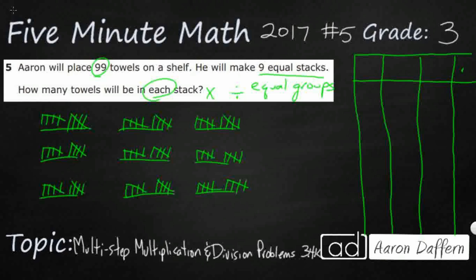I'm really close. That makes sense — I've got nine stacks of 10 right now, and nine stacks of 10 makes 90. So if I need to get to 99, I can just add one more to each stack: 1, 2, 3, 4, 5, 6, 7, 8, 9. Adding nine more makes 99. So nine stacks of 10 make 90, and nine stacks of 11 make 99. That makes sense because I just added nine more. My answer is going to be 11.